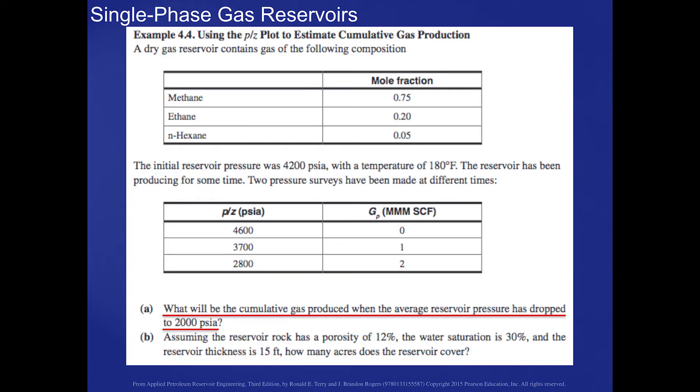Let's take a look at example 4.4, which uses the P over Z plot to estimate cumulative gas production. We're given a gas made up of methane, ethane, and hexane, and we'll use that composition to calculate a Z factor. We're also given P over Z data and the gas produced at those conditions. Part A asks what will be the volume of gas produced when the average reservoir pressure drops to 2,000 PSIA.